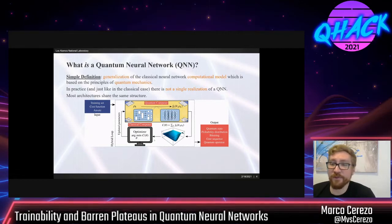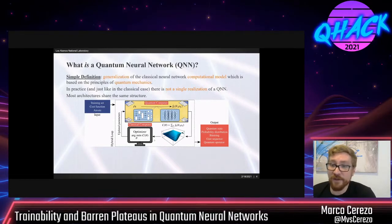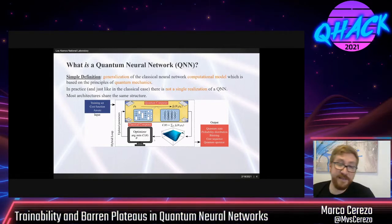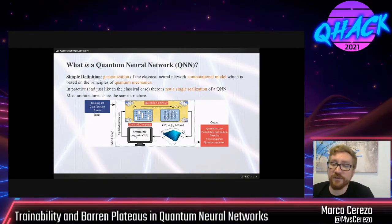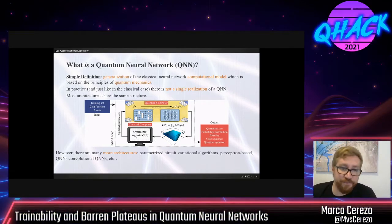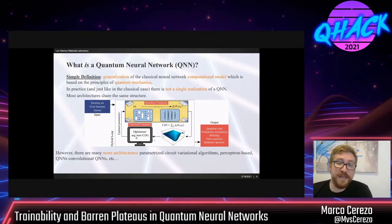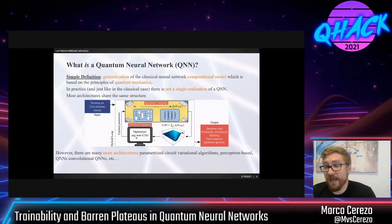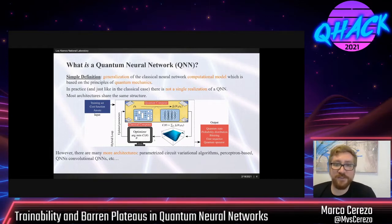The output of the quantum neural network might be a quantum state — for instance, in the variational quantum eigensolver — or it might be a probability distribution, a bit string when solving optimization problems in QAOA, a gate sequence when compiling a unitary, or an operator we're trying to find. In all cases, it's sort of the same structure. There are many architectures that fit into this framework: parametric circuits for variational algorithms, perceptron-based quantum neural networks, convolutional quantum neural networks, et cetera.